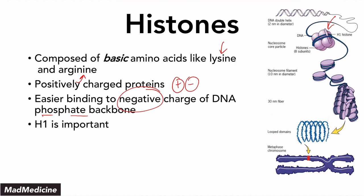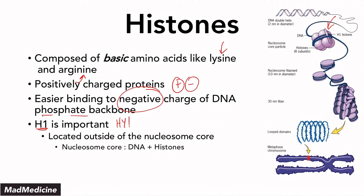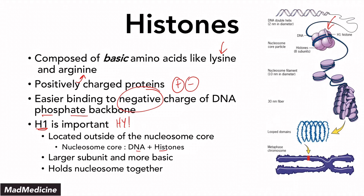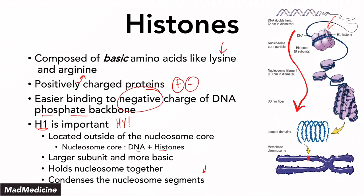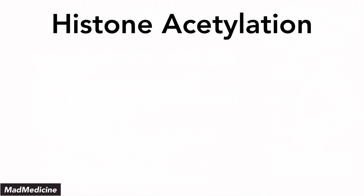The H1 subunit is the most important — this is very high yield. You can be tested on what component lies outside, or which component functions to hold the histone together; the answer is usually the H1 histone. It is located outside of the nucleosome core, and it is the largest subunit but also more basic. The more basic the protein, the better it's going to bind to the DNA. The H1 subunit holds the nucleosome together and condenses the nucleosome segment, which is why it is so high yield to remember.